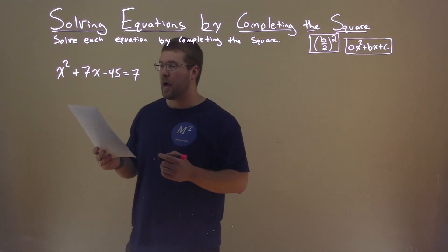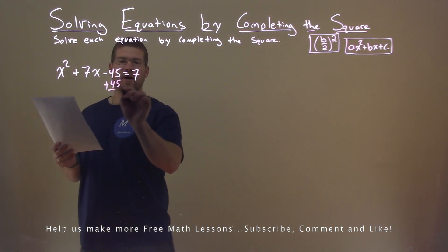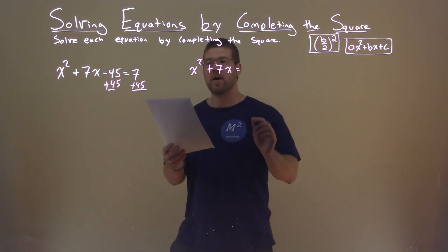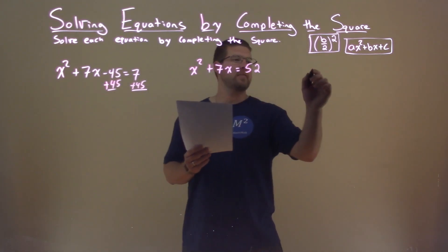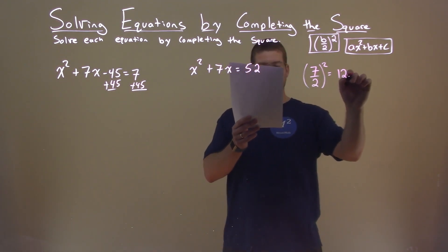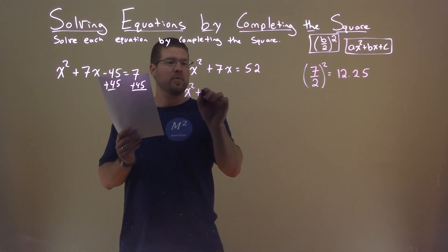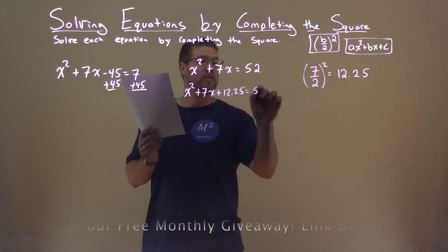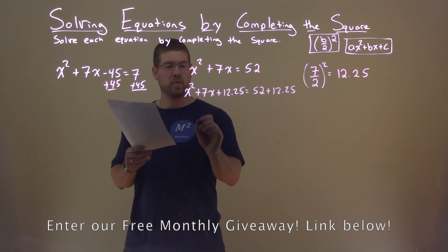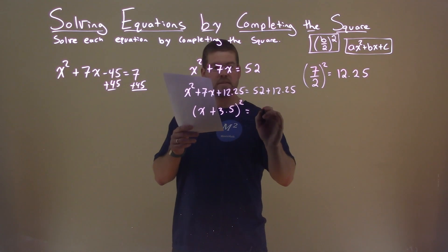We're given this problem right here: x squared plus 7x minus 45 equals 7. We're going to solve this by completing the square. First thing I'm going to do is add 45 to both sides: x squared plus 7x equals 7 plus 45, which is 52. Looking at my B value, which is 7 — dividing by 2 and squaring it: 7 divided by 2, squared, is 12.25. Adding 12.25 to both sides: x squared plus 7x plus 12.25 equals 52 plus 12.25. The left-hand side is a perfect square — x plus 3.5, all squared — and the right-hand side simplifies to 64.25.